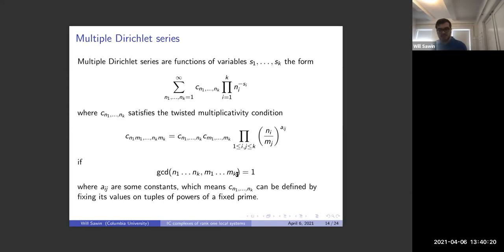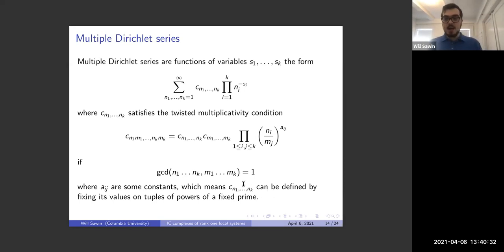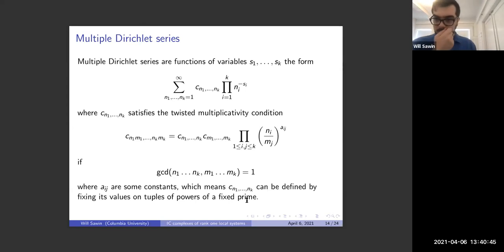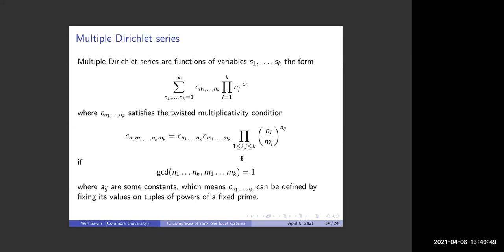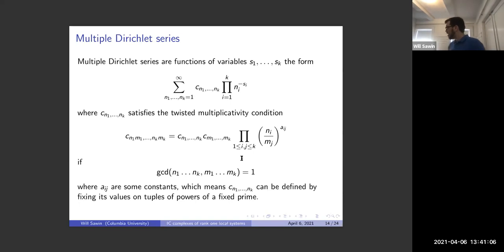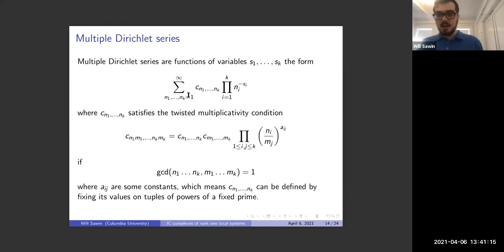A naive question: are series where you require the n_i's to be ordered part of this theory? I think those multiple zeta function type sums — where you demand n_1 ≤ n_2 ≤ ⋯ ≤ n_k — are just very different, and there's not a lot of overlap between the theories. These multiple Dirichlet series come from certain algebraic contexts where it doesn't make sense for things to be ordered, originally found studying automorphic forms on certain affine groups.